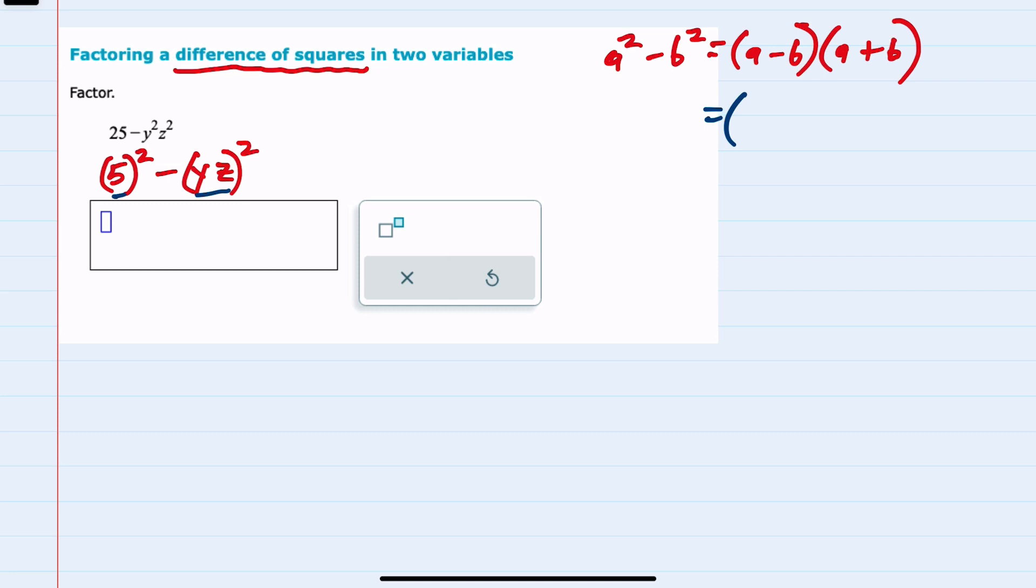So in factoring, our first term is 5, so a is 5 minus b, which is yz. And the second part when factoring is again the a, which is 5, plus the b, which is yz. So this would be our factored expression.